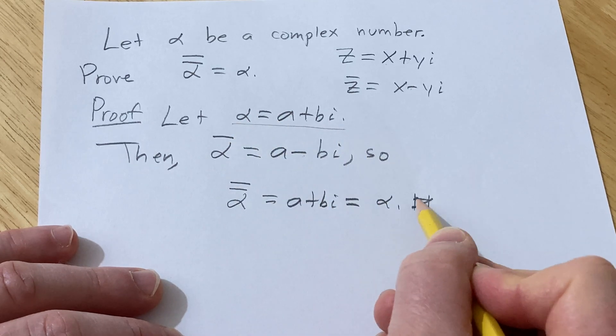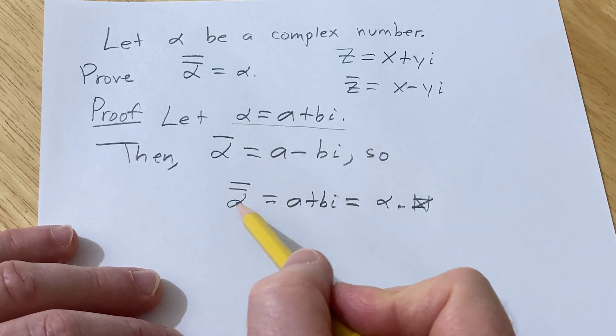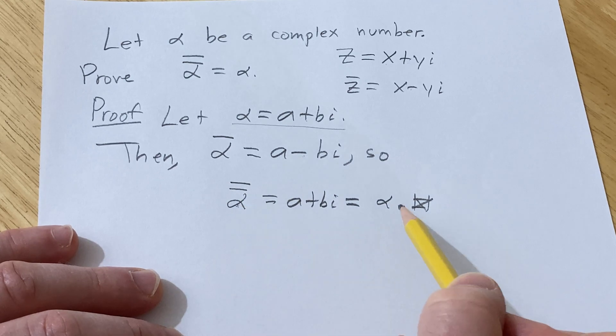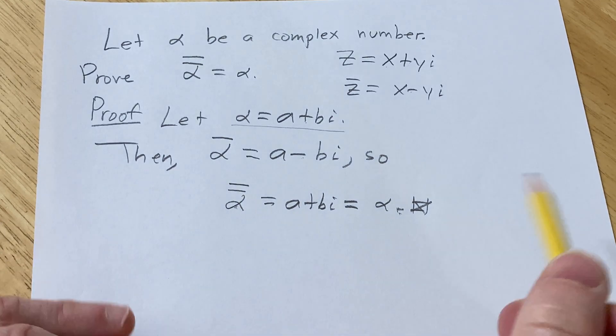And so the proof is complete. Right, we've started we have the conjugate of the conjugate of alpha equal to alpha which is exactly what we wanted to show.